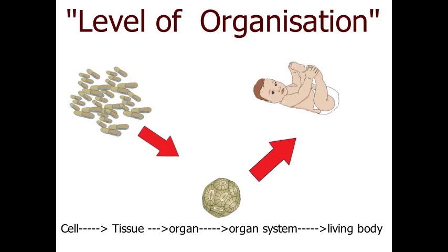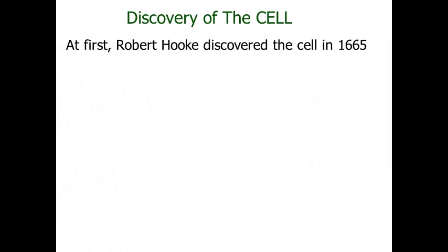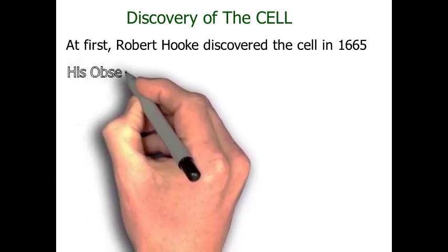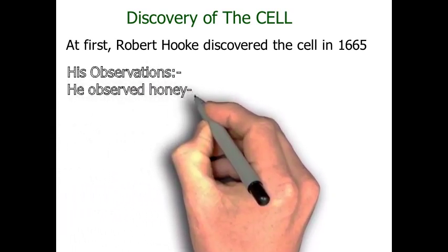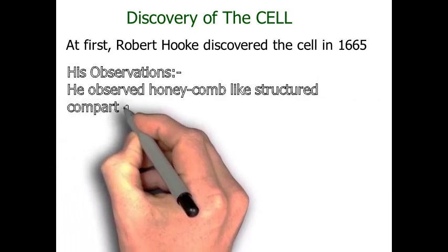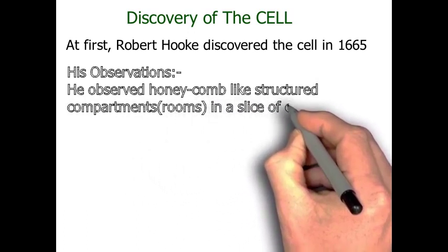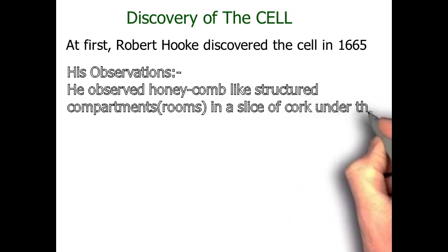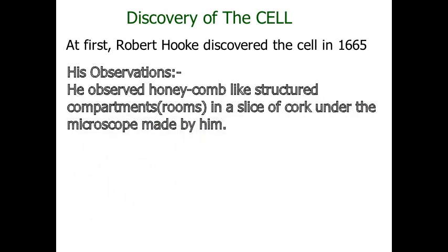Now let's talk about how the cell was discovered — where did it come from and what happened. First, Robert Hooke discovered the cell in 1665. Robert Hooke had already invented a simple microscope, and after that he began observing many living organisms through it. While he was observing these living organisms, he found something interesting.